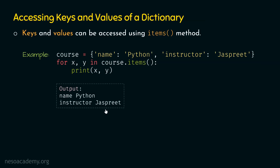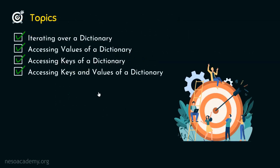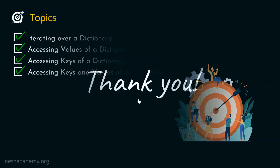I hope it is now clear how to access keys and values of a dictionary one at a time using the items method. This means we are done with this lecture. Thank you for watching this presentation — I will see you in the next one.